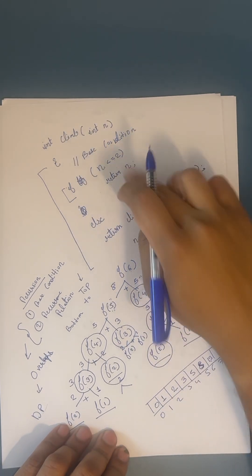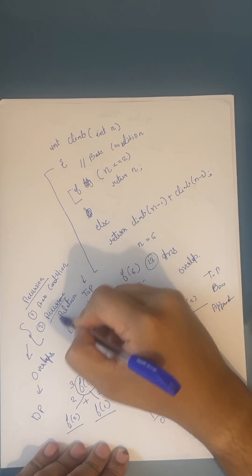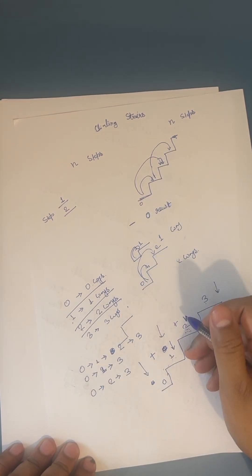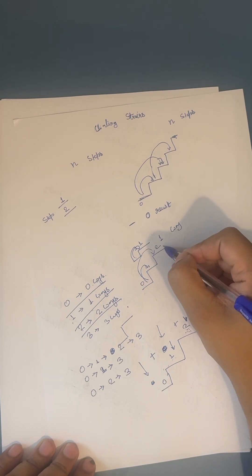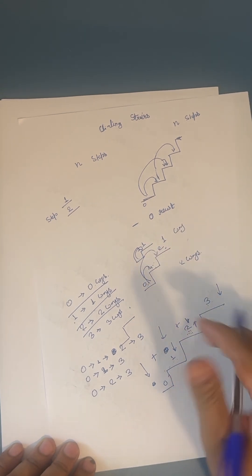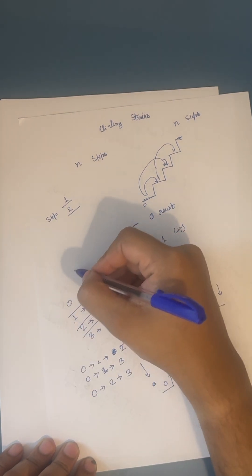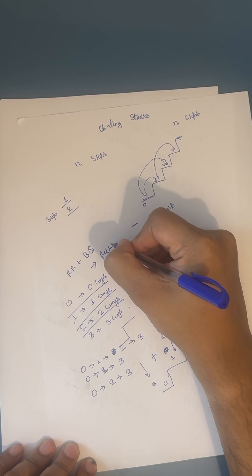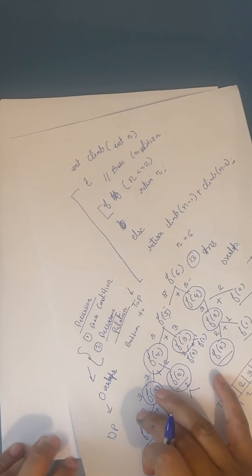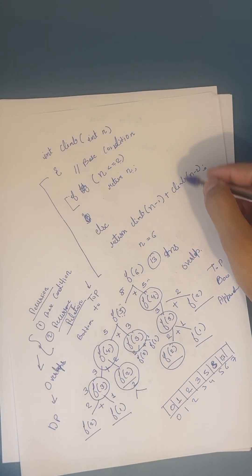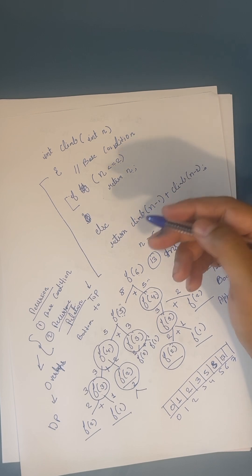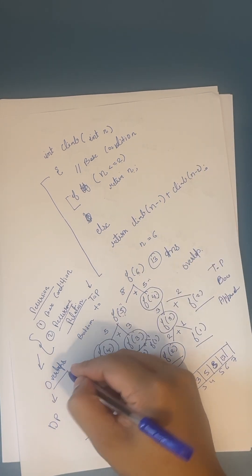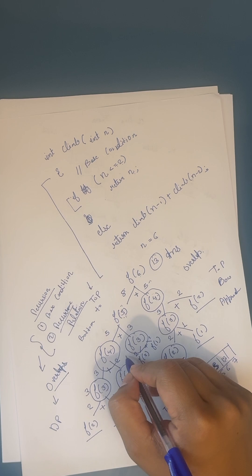To summarize: we first created a recurrence relation — the solution is the sum of the previous two. Then we have base conditions. From the recurrence relation and base conditions we recognized this as a recursion problem, so we created a recursive program. But when we submitted this recursive program to LeetCode, it gave a timeout exception.